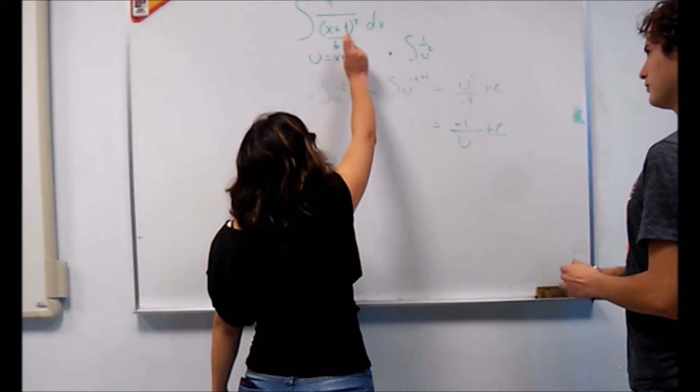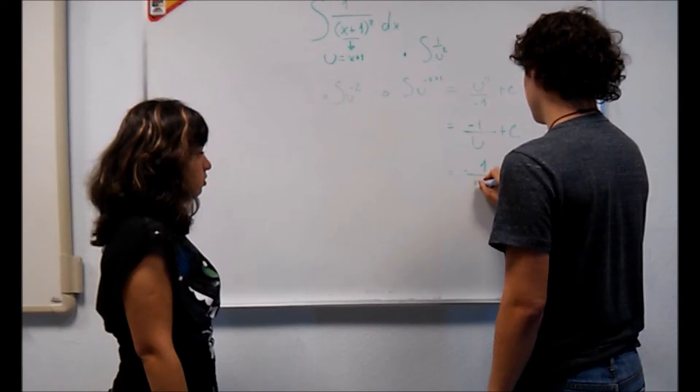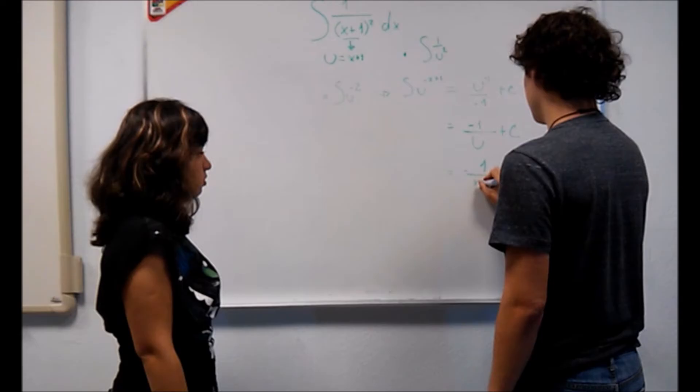Then we substitute x plus 1 for u. The final answer is minus 1 divided by x plus 1 plus c.